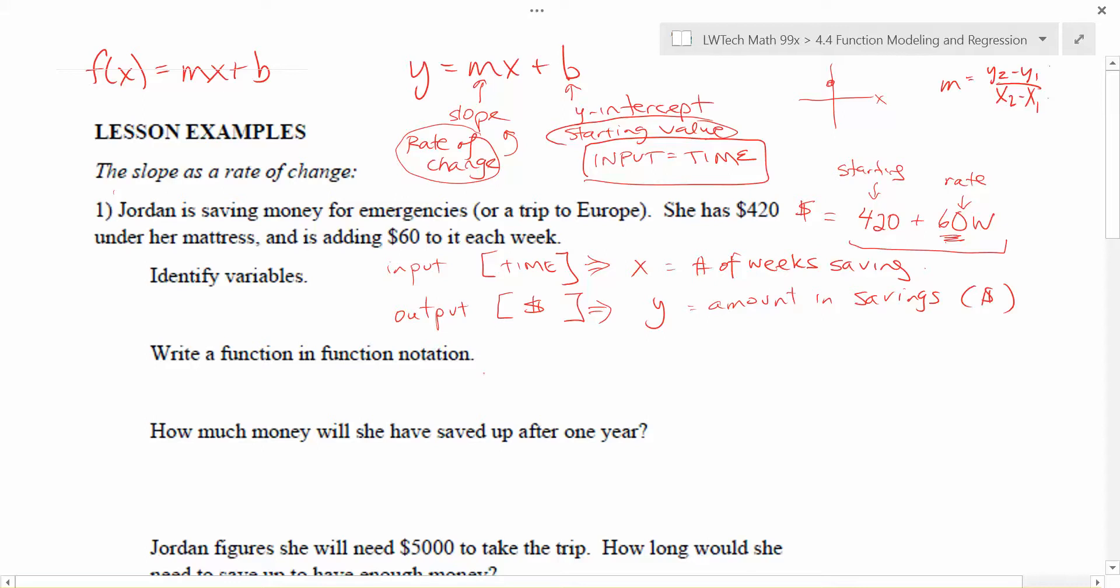The next problem here asks us to write a function in function notation. So what that means is if x is our input variable, we can label our function f of x, and then we want to write our rule. Our rule, we want to try to start with that y equals mx plus b. m is going to be the rate, so that's going to be a change of $60 a week times by x, which is the number of weeks, plus our starting value, which was $420. So this is going to be our function in function notation when this is our input variable.